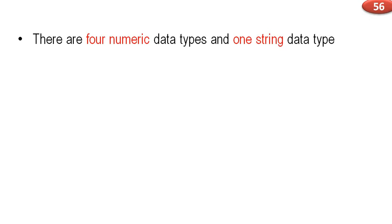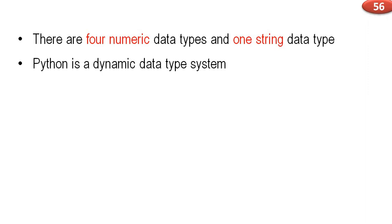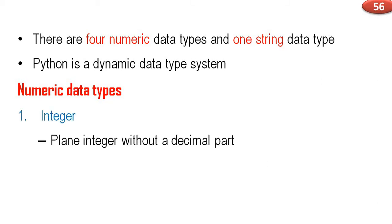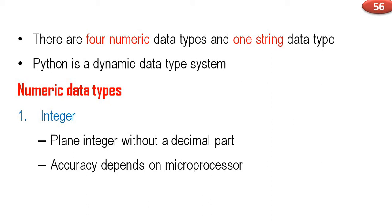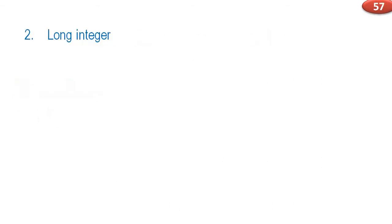There are four numeric data types and one string data type. Python is a dynamic data type system. The four numeric data types are: first, integer — a plain integer without any decimal part, like 10 or 20. Its accuracy depends on the microprocessor, normally 32-bit. Second type is long integer.